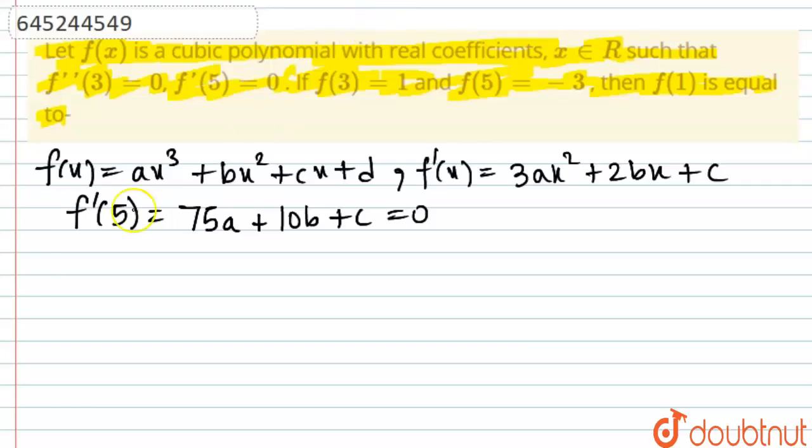Now we have f'', so f''(x) is basically 3ax, not sorry, it should be 6a. So 6ax plus 2b. So 6a times x, 3 times 2 coming here, so that is making 6, 6ax plus 2b and just that much.